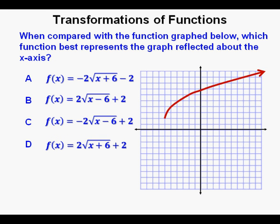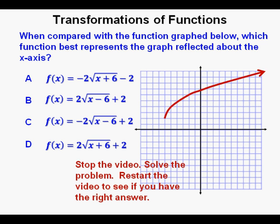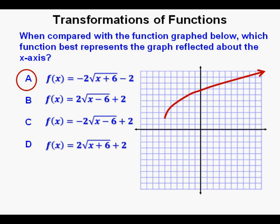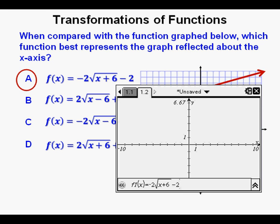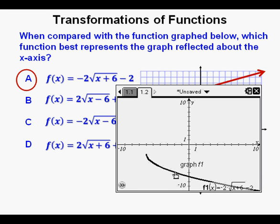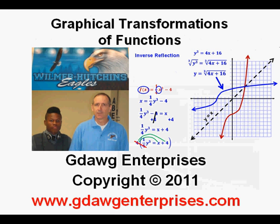Another problem: when compared with the function graphed below, which function best represents the graph reflected about the x-axis? The correct answer is A: f of x equals negative 2 times the square root of quantity x plus 6 minus 2. The easiest way to solve this is to graph if possible. Here is the function entered into the calculator and graphed — a reflection about the x-axis. It doesn't match the graph perfectly because of screen settings, but changing the window settings makes it much clearer. This has been Graphical Transformations of Functions. Thanks for viewing.